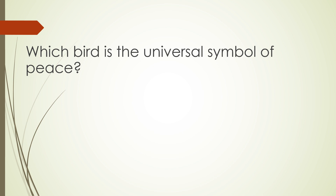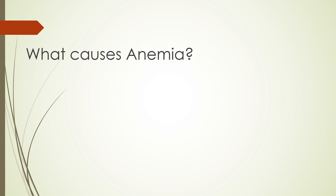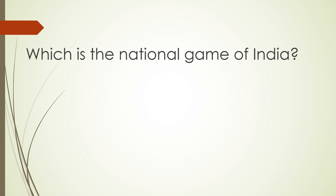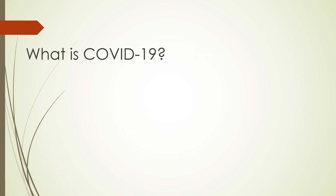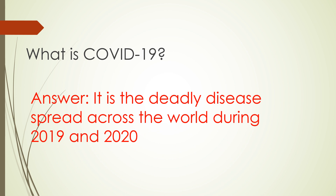Which bird is the universal symbol of peace? Answer: dove. What causes anemia? Answer: deficiency of iron. Which is the national game of India? Answer: hockey. What is COVID-19? Answer: it is the deadly disease that spread across the world during 2019 and 2020.